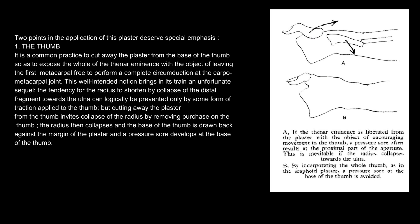This well-intended notion brings in its train an unfortunate sequel. The tendency for the radius to shorten by collapse of the distal fragment towards the ulna can logically be prevented only by some form of traction applied to the thumb. But cutting away the plaster from the thumb invites collapse of the radius by removing purchase on the thumb. The radius then collapses, and the base of the thumb is drawn back against the margin of the plaster, and a pressure sore develops at the base of the thumb.